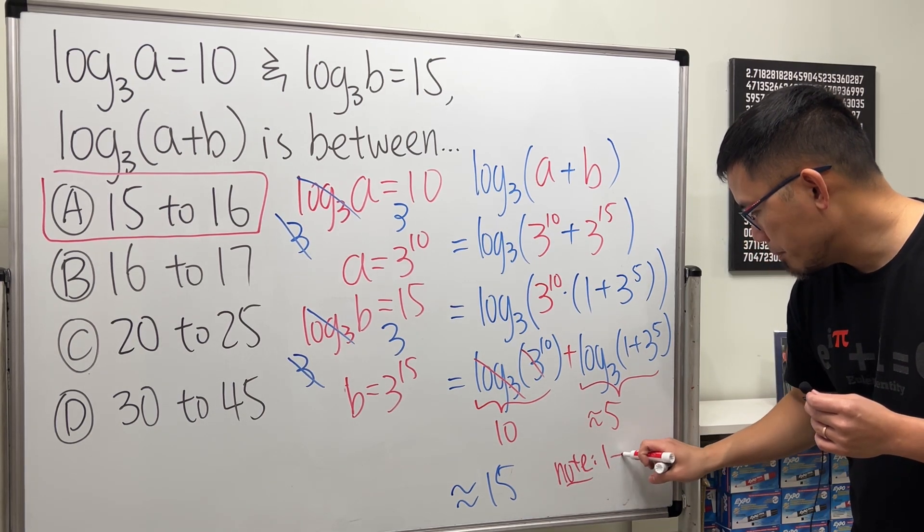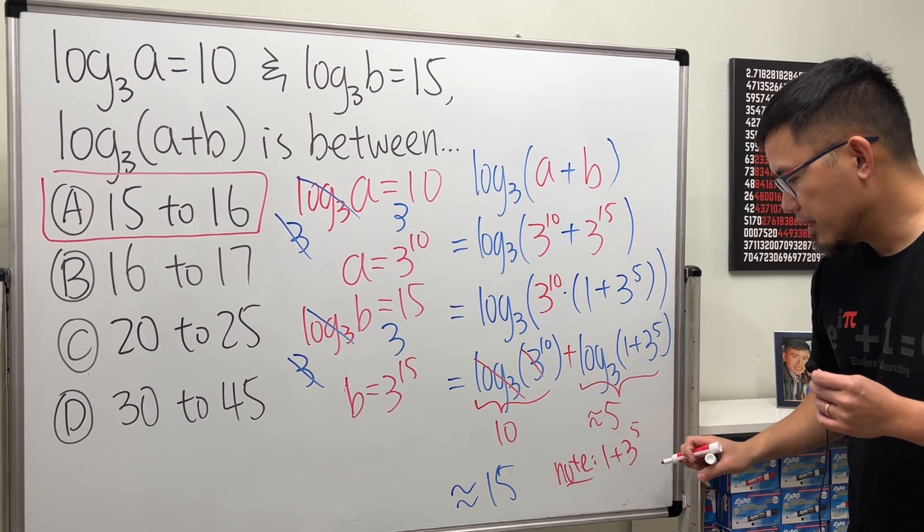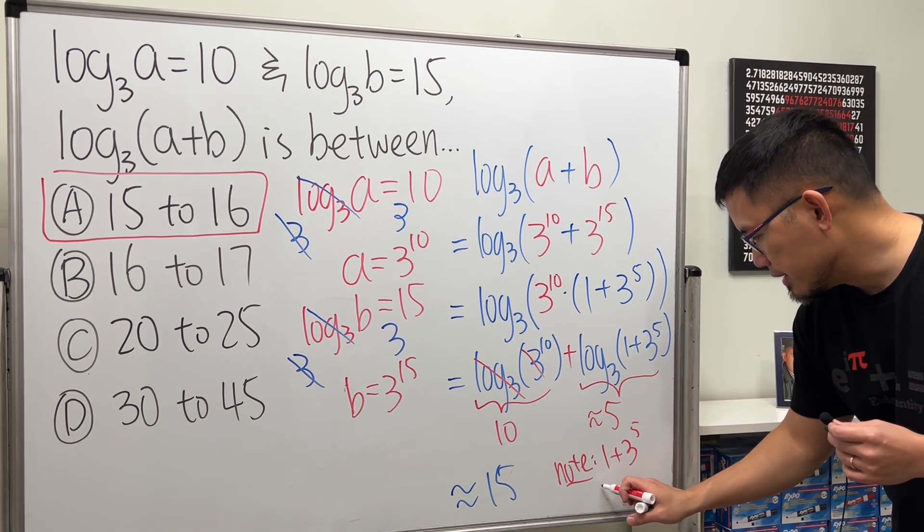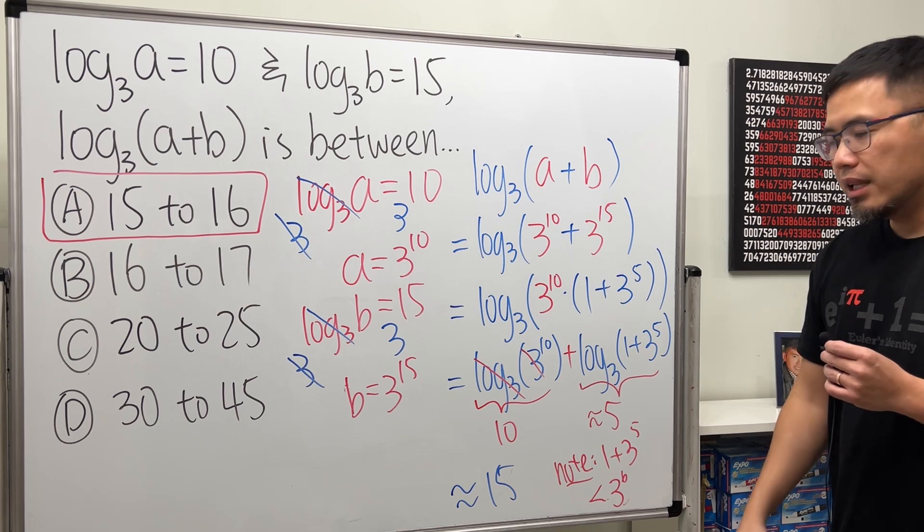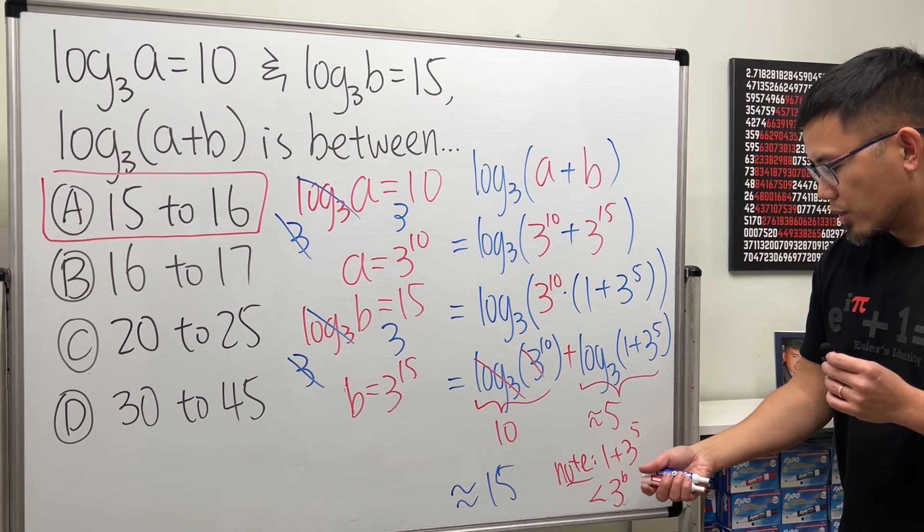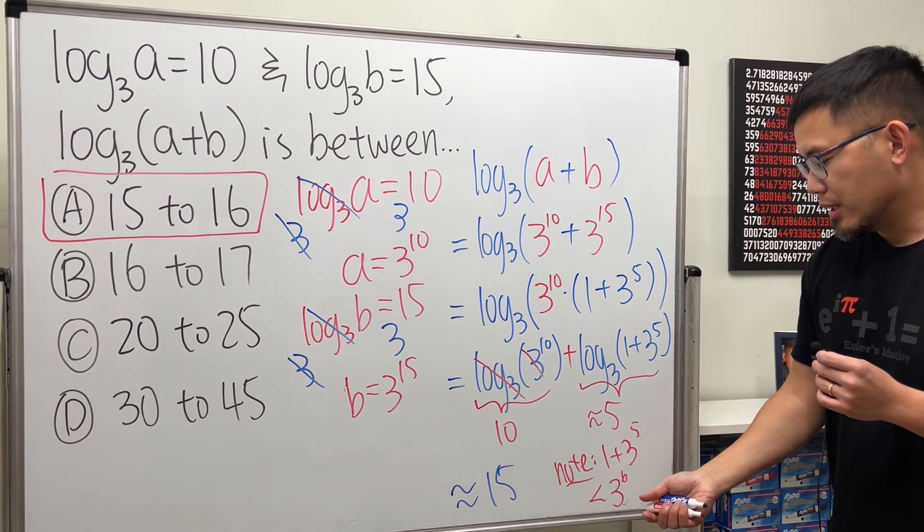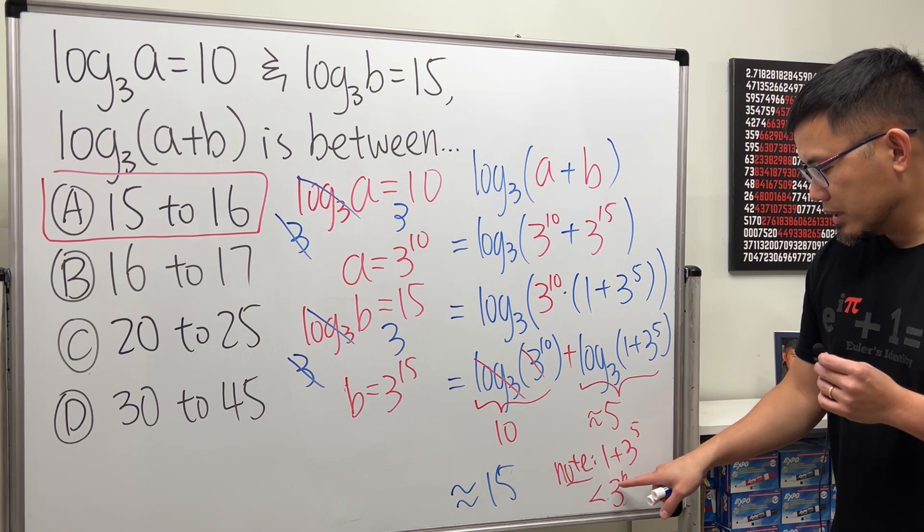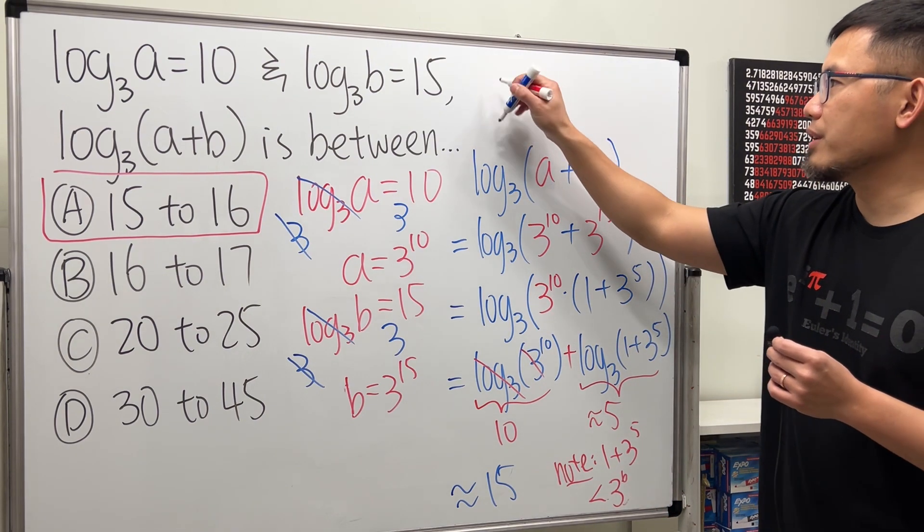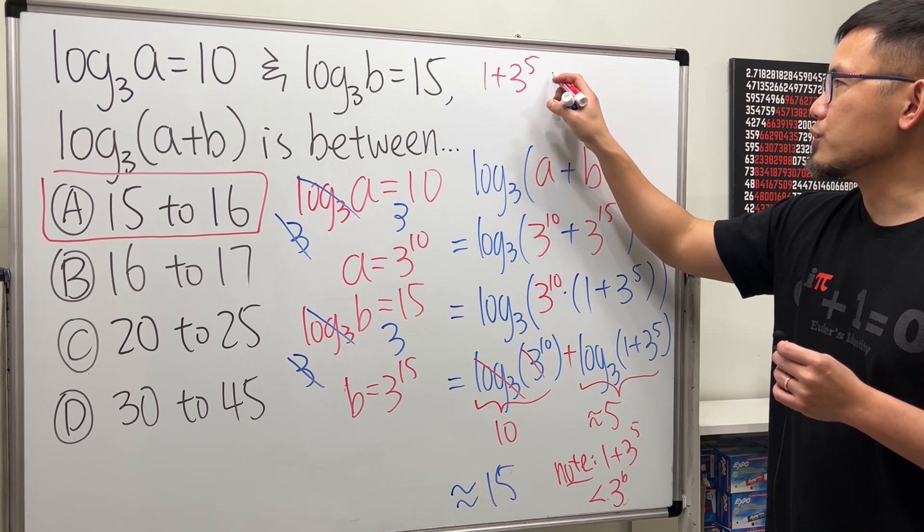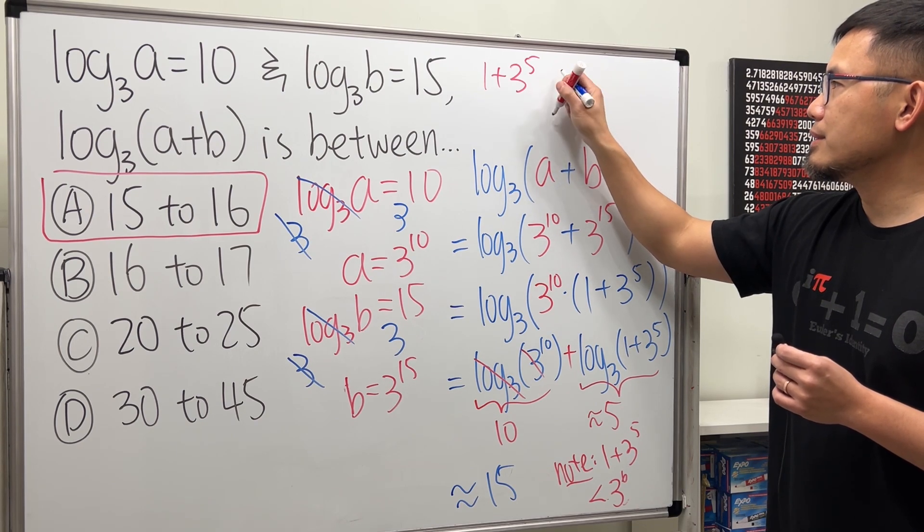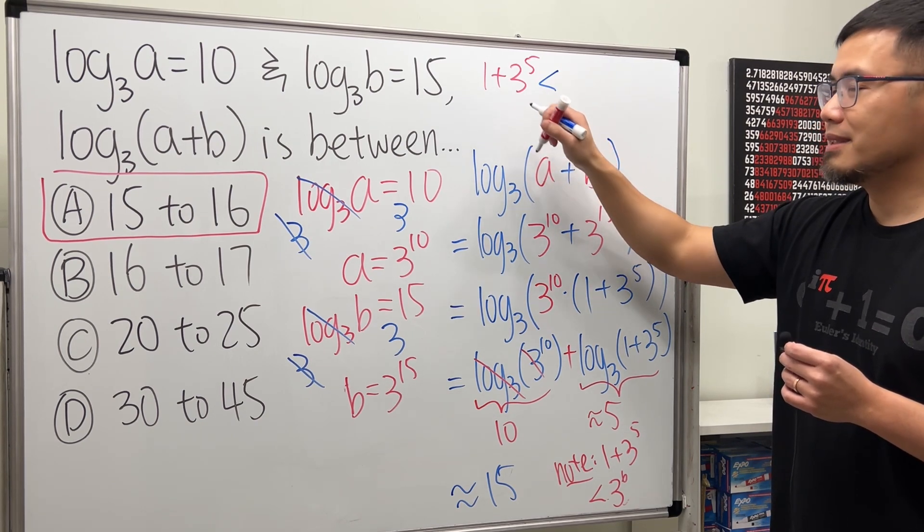If we have 1 plus 3 to the 5th, this right here I will tell you, this is certainly less than 3 to the 6th. And of course, you can do more algebra or do more computation to figure it out. One thing to do is, you can just make a comparison right here. 1 plus 3 to the 5th. This right here is, for sure, less than, let's say, let's do this, okay?